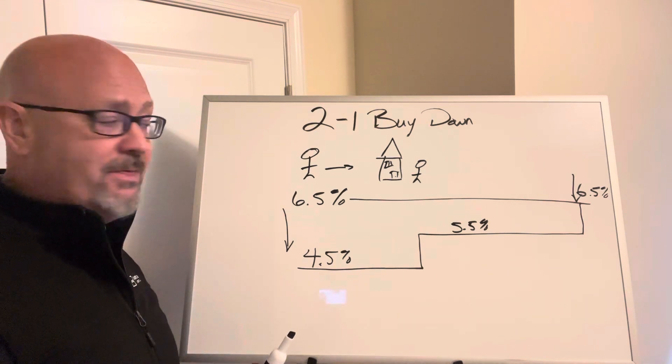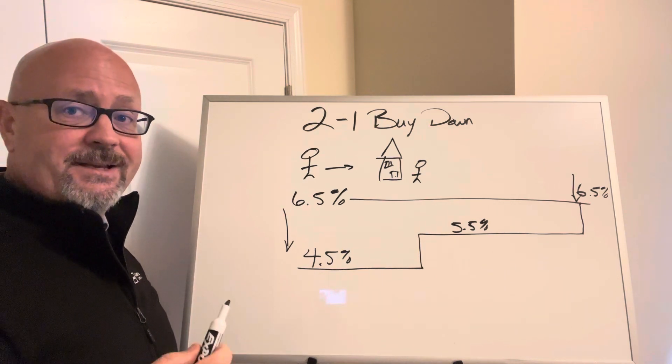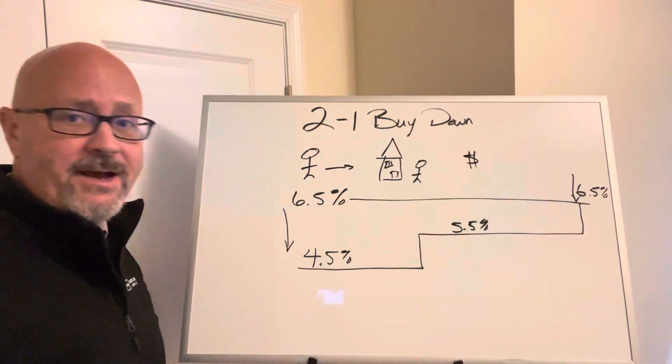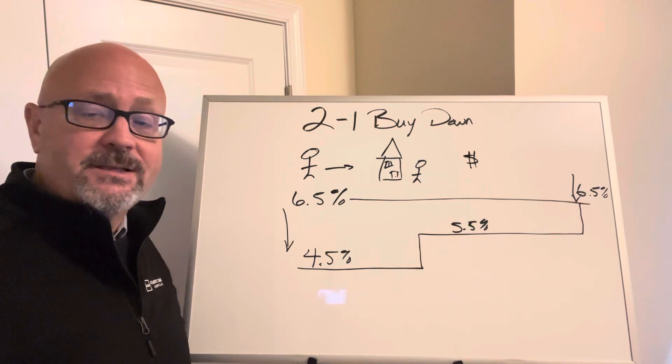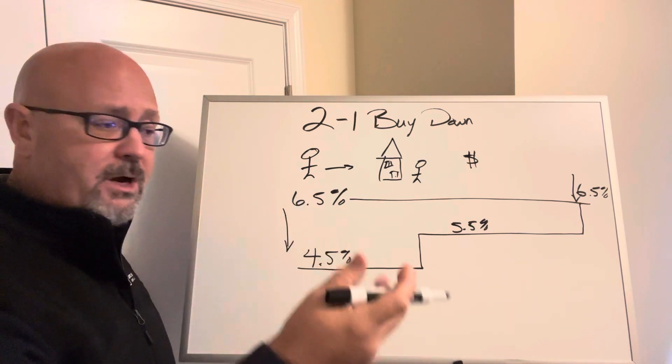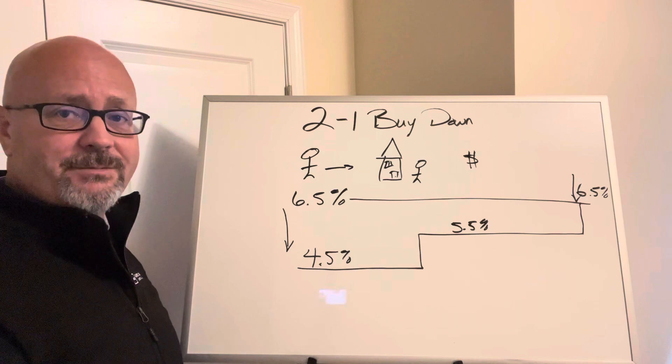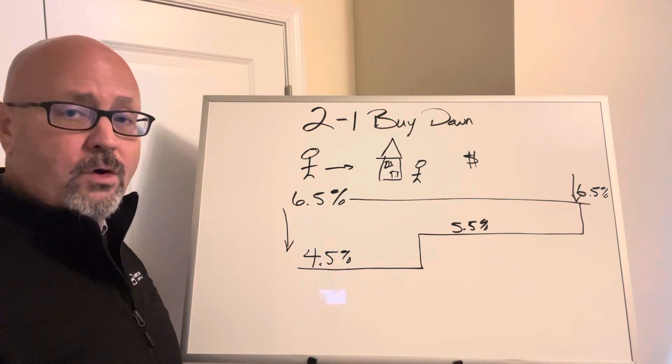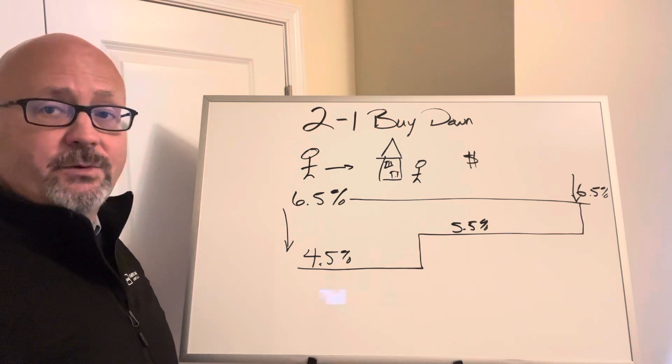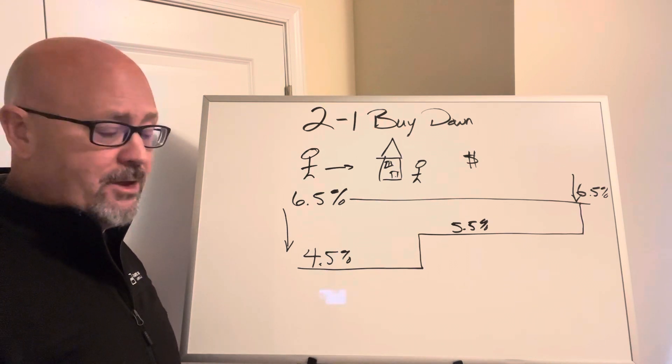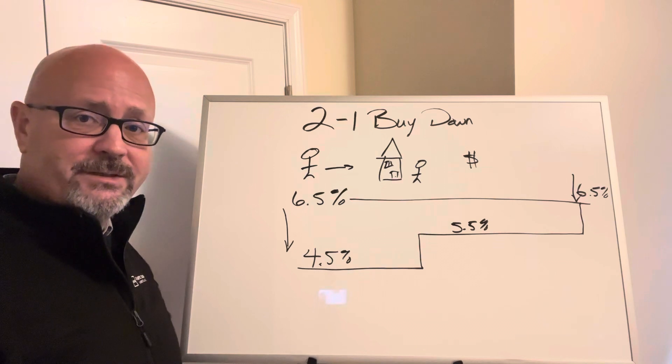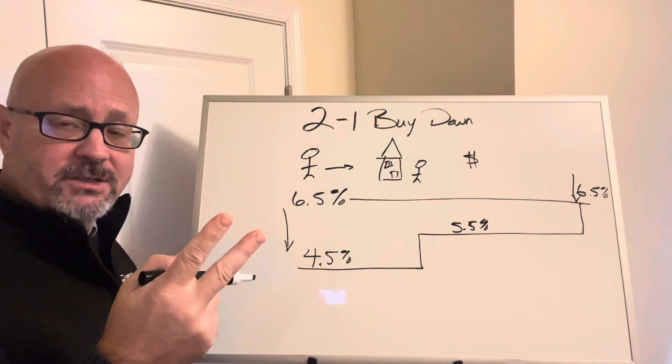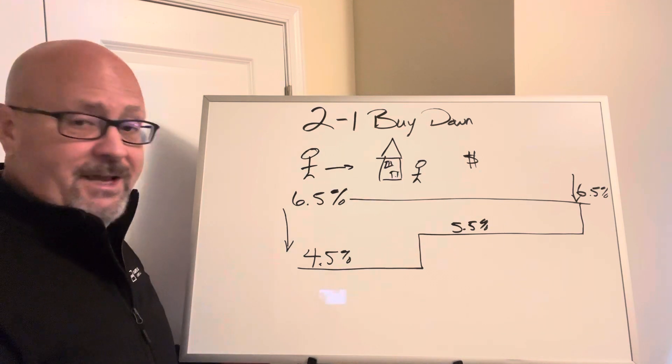Now the function behind this is it has to come in the form of a seller concession. Seller concessions in the past have been the seller giving you money for closing costs or for repairs or other items like that. In this case, that money would have to be used towards the rate, and the only way that this can be done right now is either through the seller conceding the money or a combination of the seller and the agents conceding the money. That's kind of how it works.